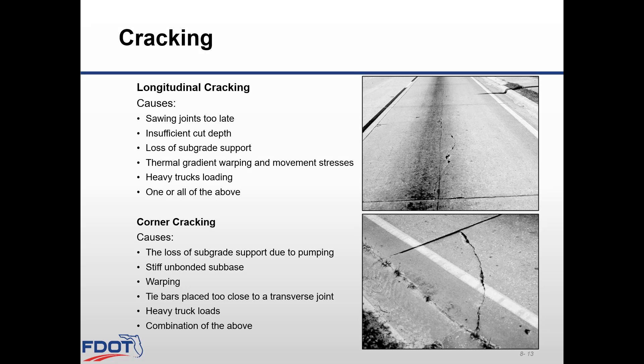For longitudinal cracking, some causes include sawing the joints too late. Standard Specs 350-13.3.3 provides guidance to saw cut the pavement as soon as possible, but in no case longer than 12 hours after placing the concrete. Insufficient cut depth is also a cause; guidelines are provided in Standard Plans Index 350 and Specs 350-13. Additional causes include loss of subgrade support and thermal gradient warping and movement stresses.